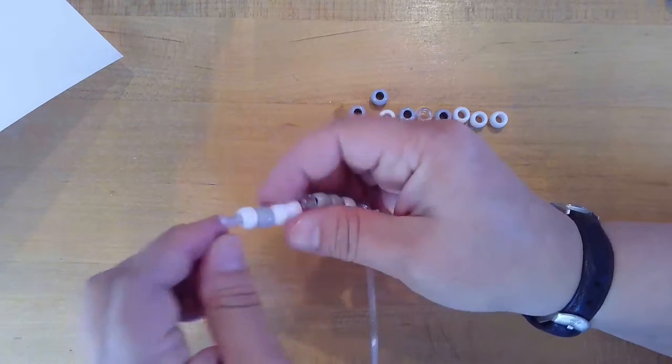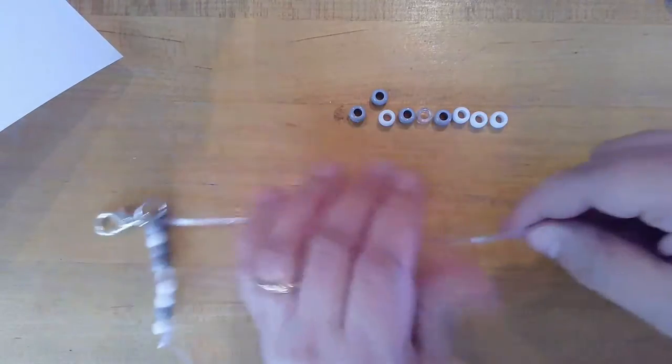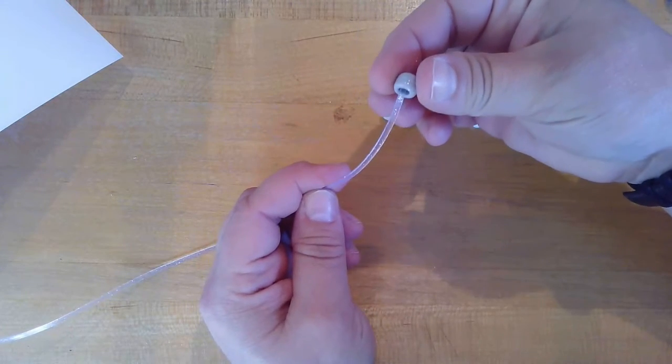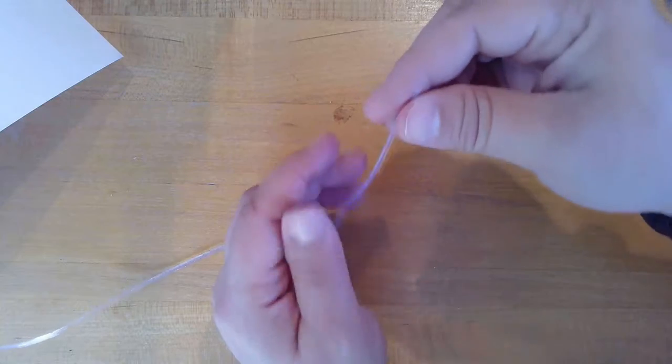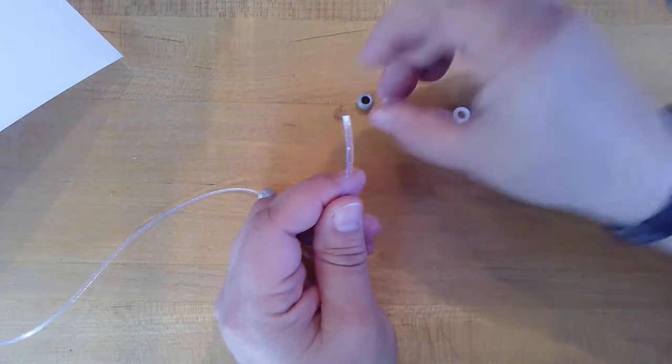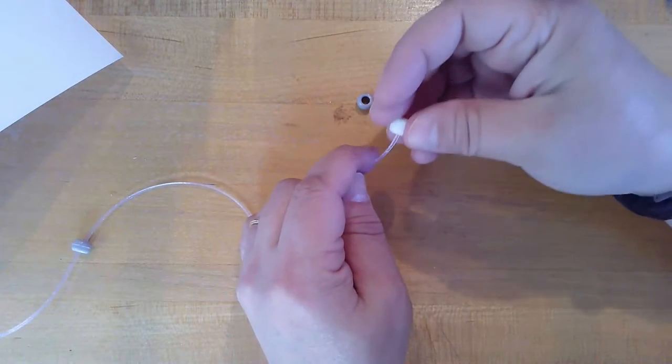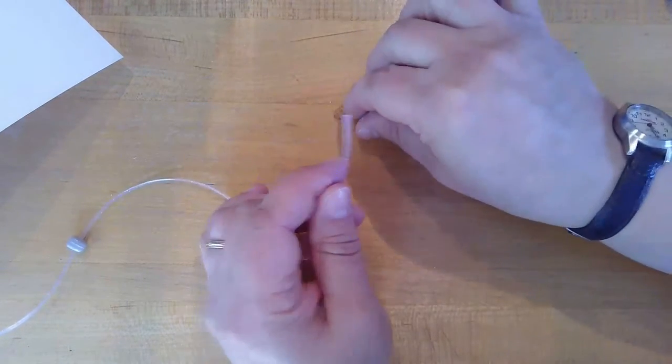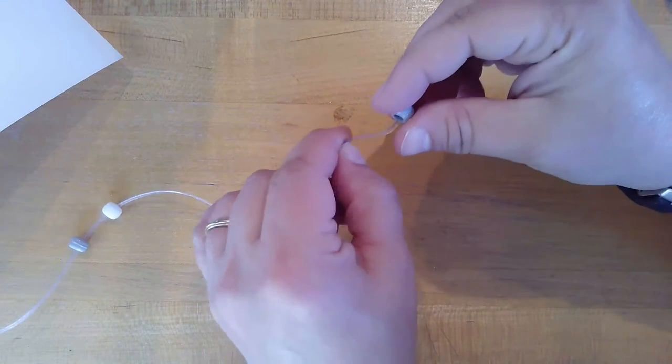And there you go. Like that. So there's my letter M. Now I'm going to do the letter G, just repeating the same thing with the other end of the cord. Like so.